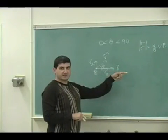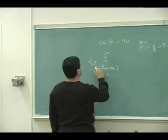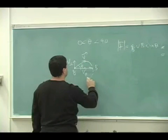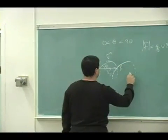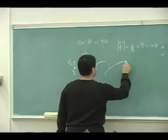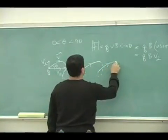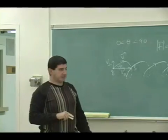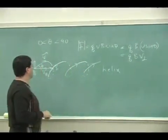V parallel is unaffected. The V perpendicular goes like that. So it looks like whenever it's on the back, I do like a dotted line. You see? It's called the helix, like that.